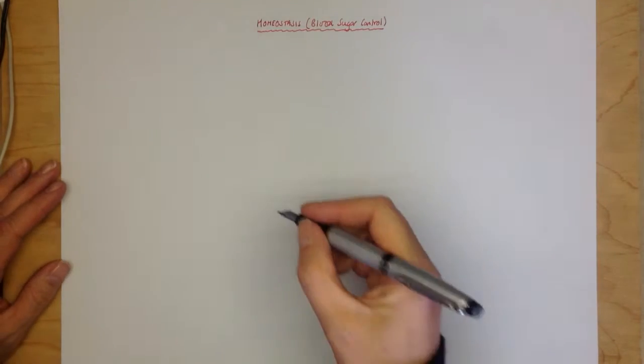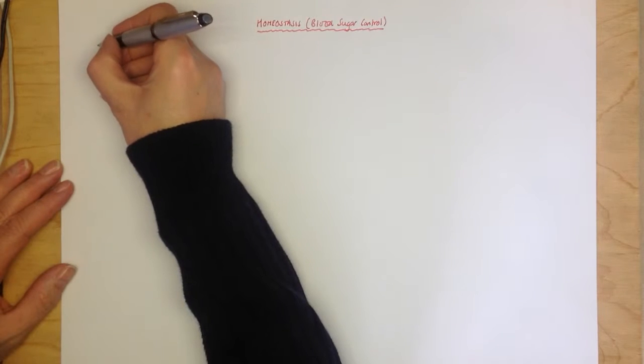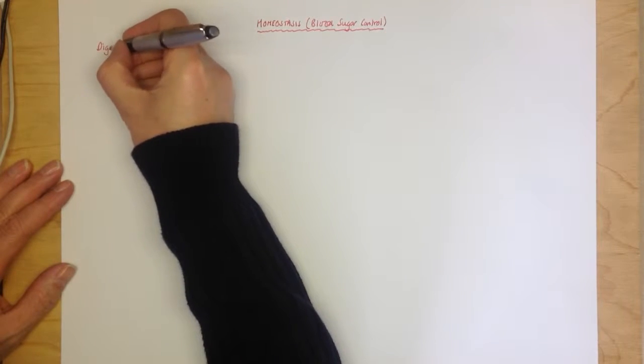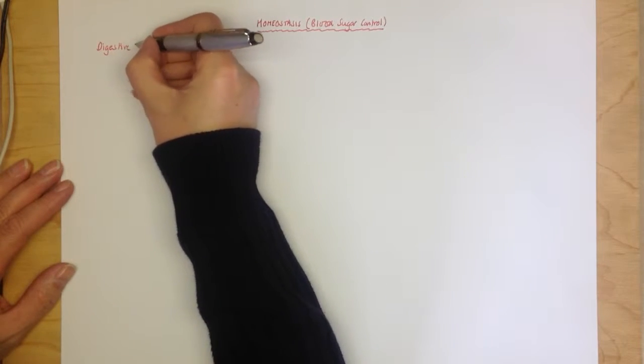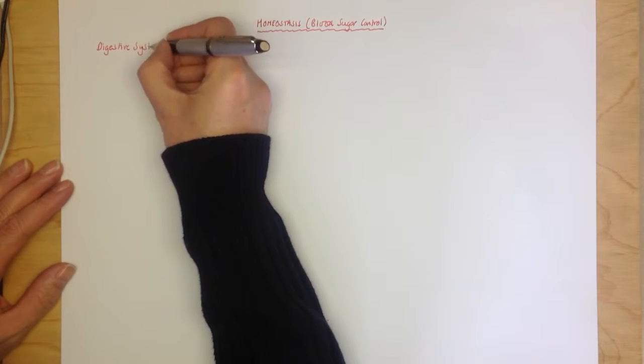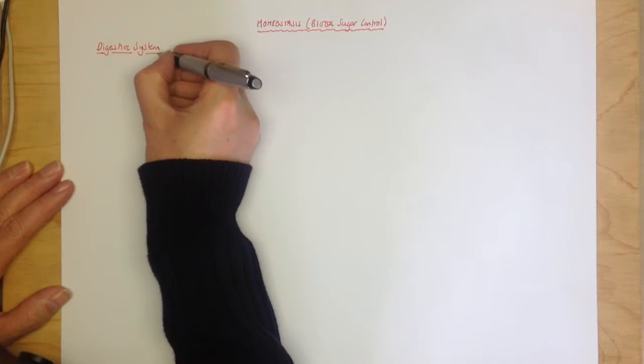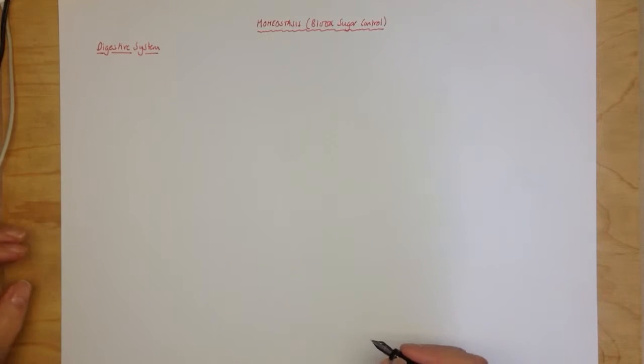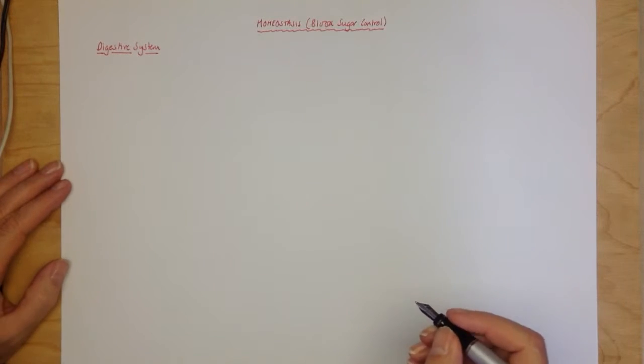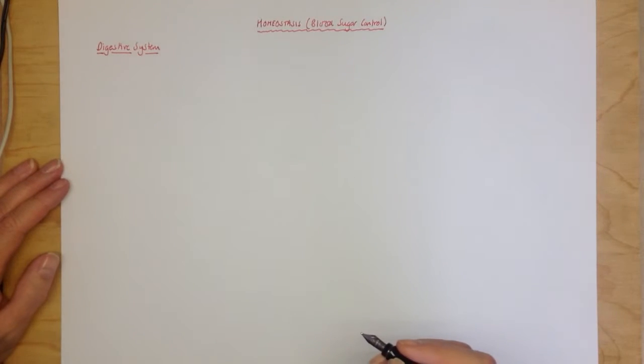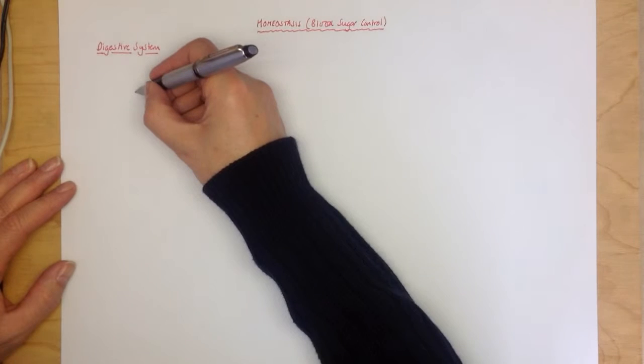Okay, homeostasis blood sugar control. The first thing you need to really have an understanding of is the digestive system, because this will help place all the blood sugar control in context.